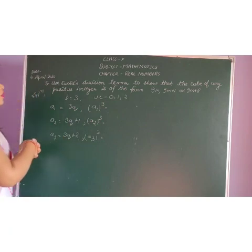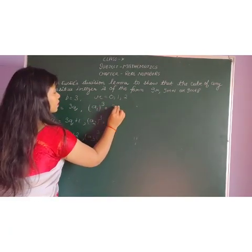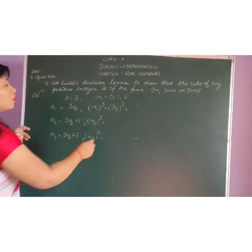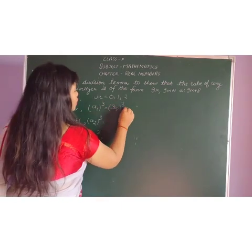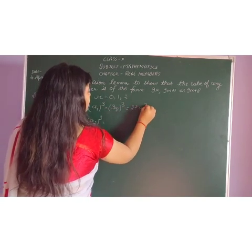Now see what is the value of A1? A1 value is 3Q. So (3Q) cubed. Now as you know the cube of 3Q is 27Q cubed.